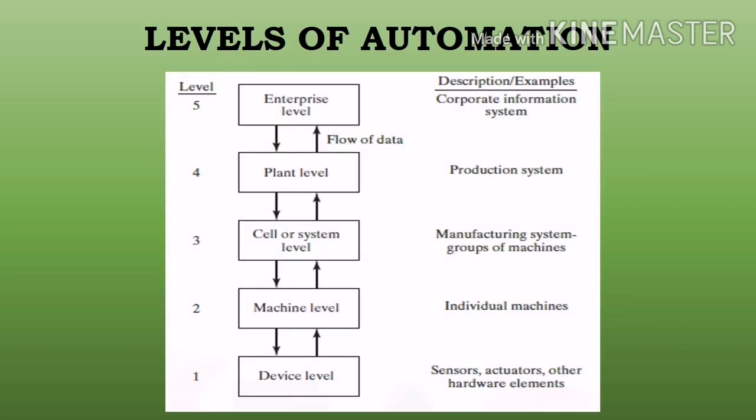Summary of levels of automation: Level 1 — device level: sensor, actuator, aur doosre tarah ke hardware components hote hain. Level 2 — machine level: individual machines hote hain, machine tools hote hain jahan par hum part program dete hain, programming karte hain, kaam karte hain. Level 3 — cell and system level: manufacturing systems ke groups hote hain jahan par production lines included hoti hain. Level 4 — plant level: factory or production system level. Level 5 — enterprise level: highest level, corporate information system.